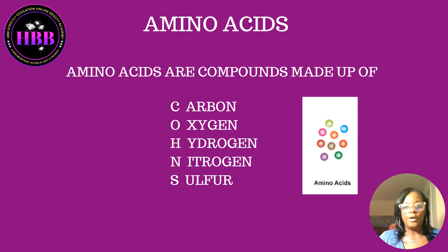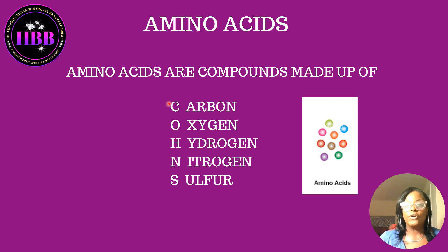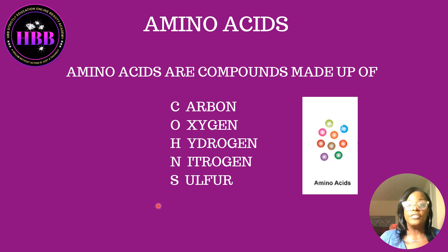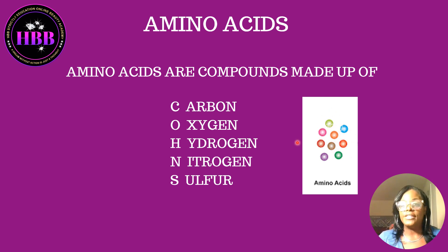Amino acids are compounds made up of carbon, oxygen, hydrogen, nitrogen, and sulfur. Remember the acronym COHNS: C for carbon, O for oxygen, H for hydrogen, N for nitrogen, and S for sulfur — you're going to see this on state board. I want you to look at this picture where they look like little beads or marbles — these are amino acids, separate and singular. Keep that in mind because we're going to need it again in a few minutes.